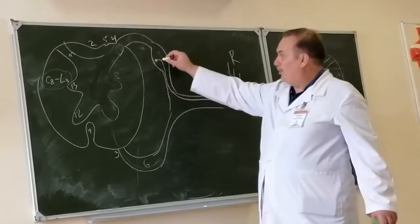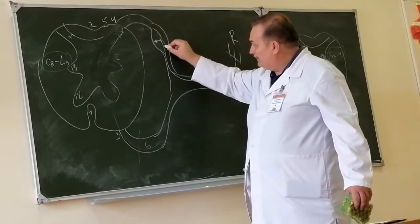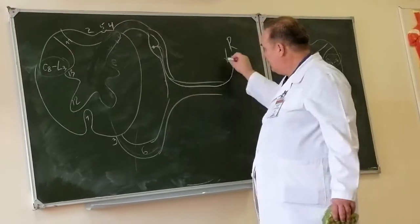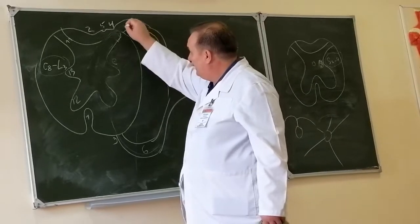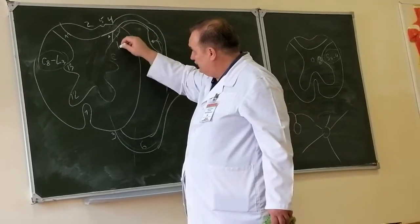Pseudounipolar neuron, that is sensory neuron. The peripheral process of this neuron goes to receptor and central process goes to spinal cord and finishes in internuntial neuron in posterior horn.